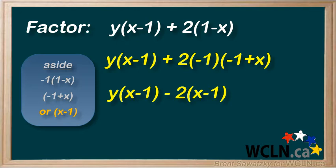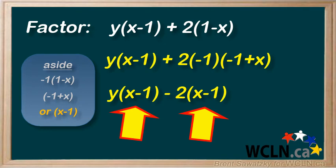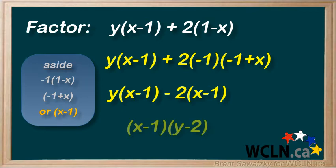And then we'll switch the x and the minus 1. And it looks exactly like we want it. Each term has an identical group now. And now we can pull it out front. And our answer would be x minus 1 times y minus 2.